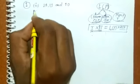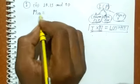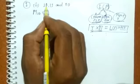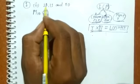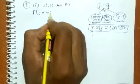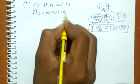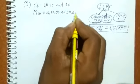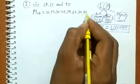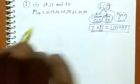First, multiples of 10: to find the multiples of any number, multiply it with counting numbers. So multiples of 10 are: 10, 20, 30, 40, 50, 60, 70, 80, 90, 100, and so on.